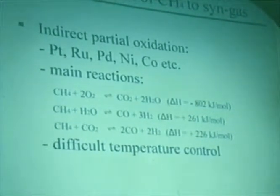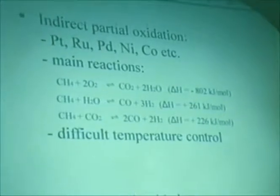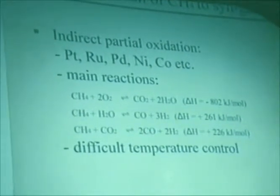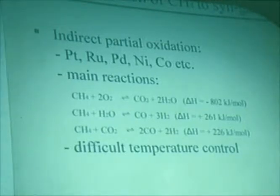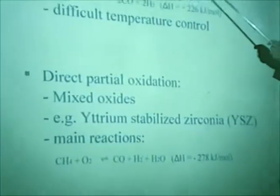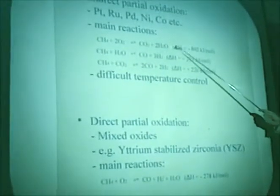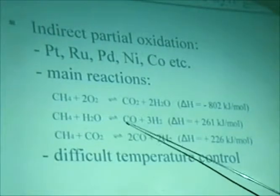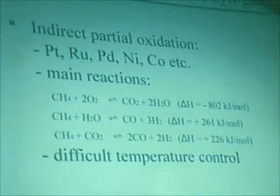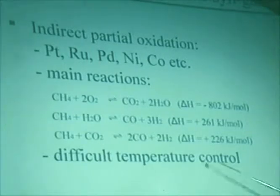On direct partial oxidation of methane to synthesis gas, one can divide partial oxidation into two parts. There are catalysts that give indirect partial oxidation, mainly metals — supported or non-supported — where the main reaction is complete combustion of methane to CO₂ and water, a rather exothermic reaction, followed by reforming reactions with water and CO₂ to obtain CO and hydrogen. Temperature control is very difficult for this process in a commercial reactor.